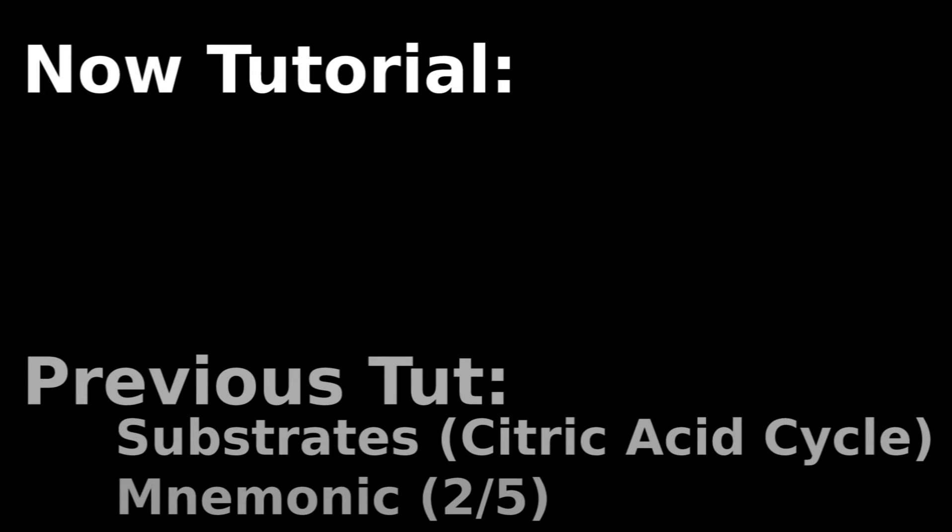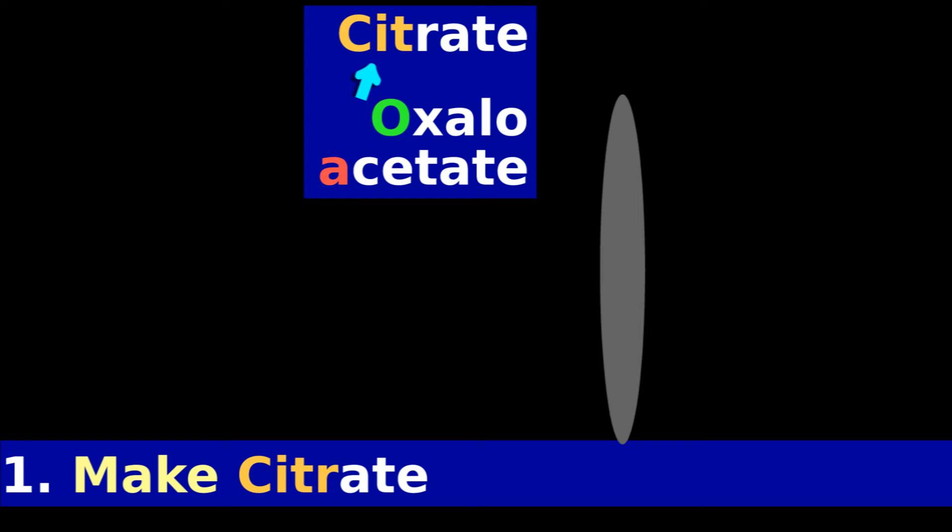This tutorial explains how to guess the enzyme name based on the name of the substrate that is near that enzyme. We will do this in four parts. Part 1: You make citrate of the citric acid cycle with citrate synthase.